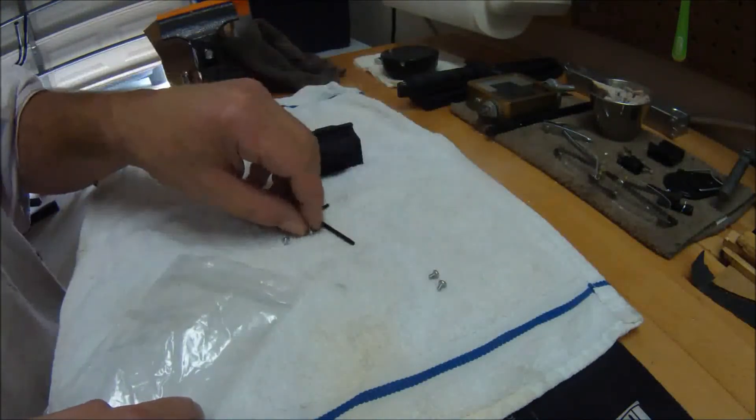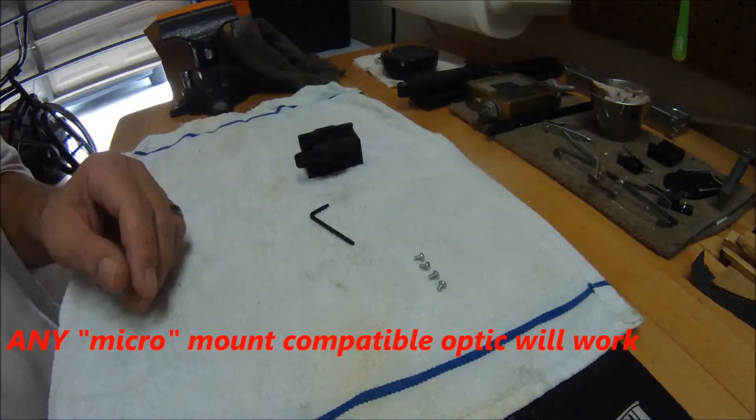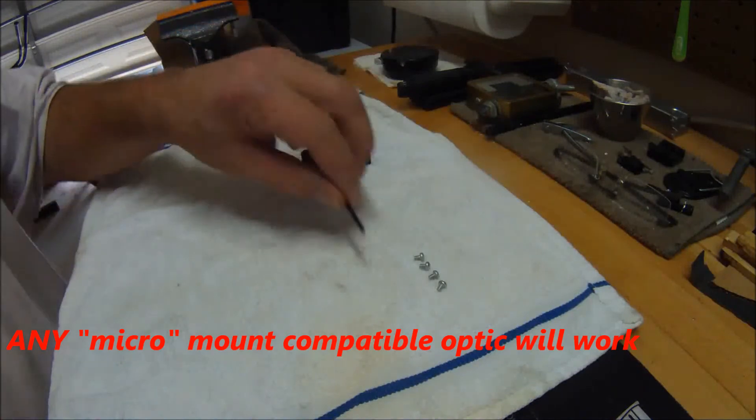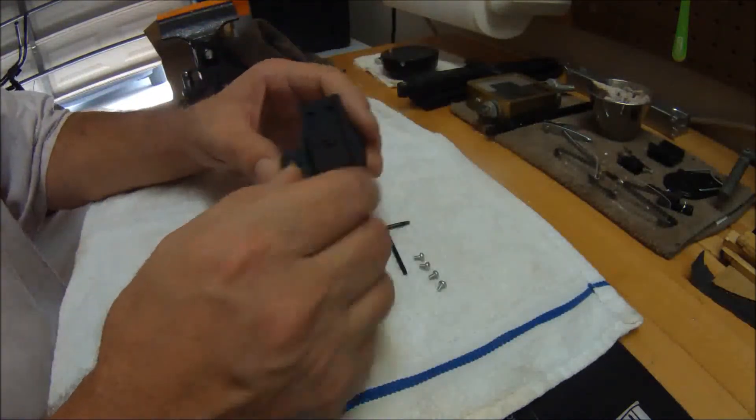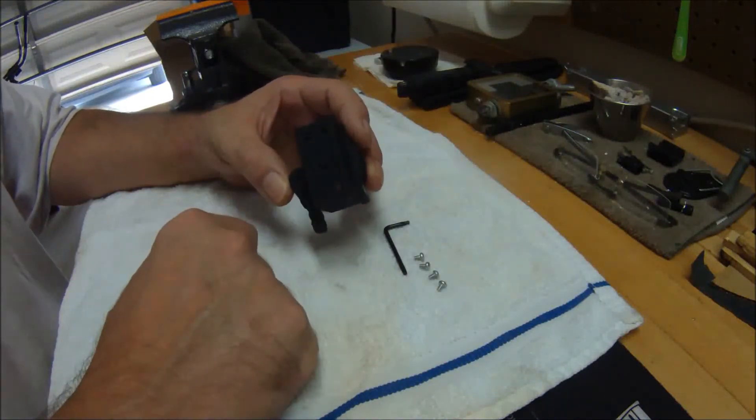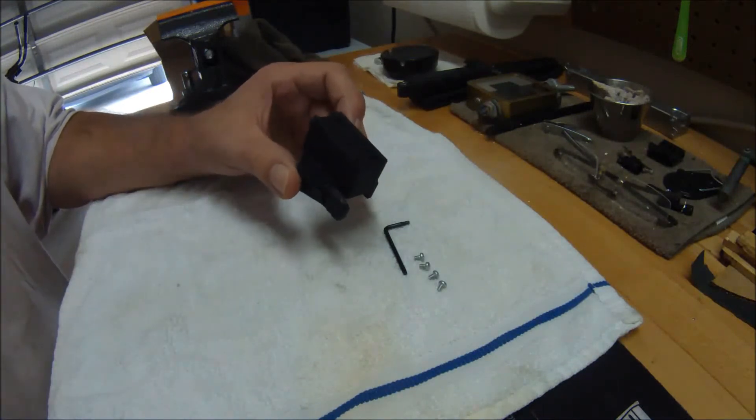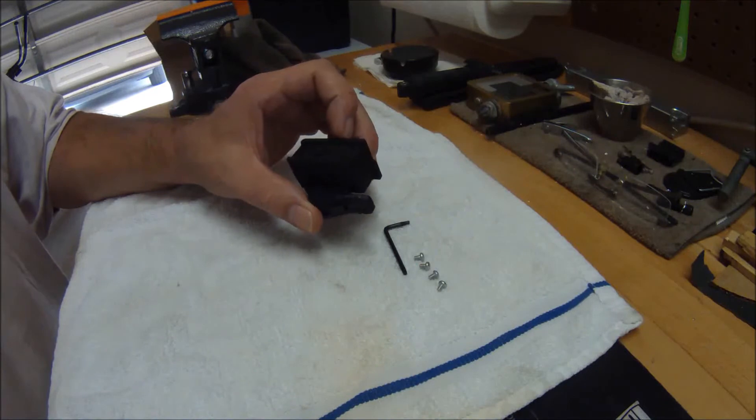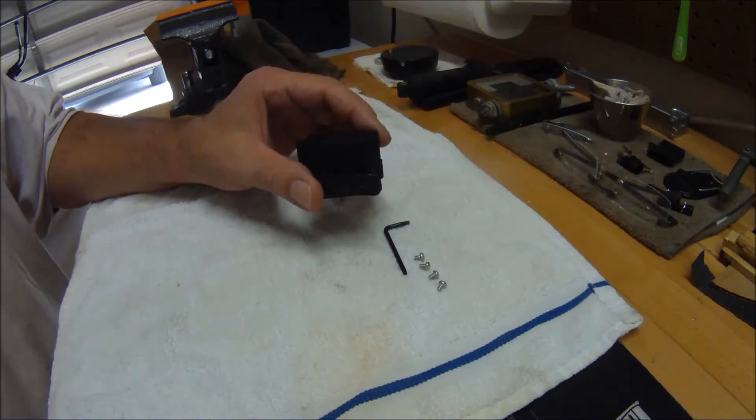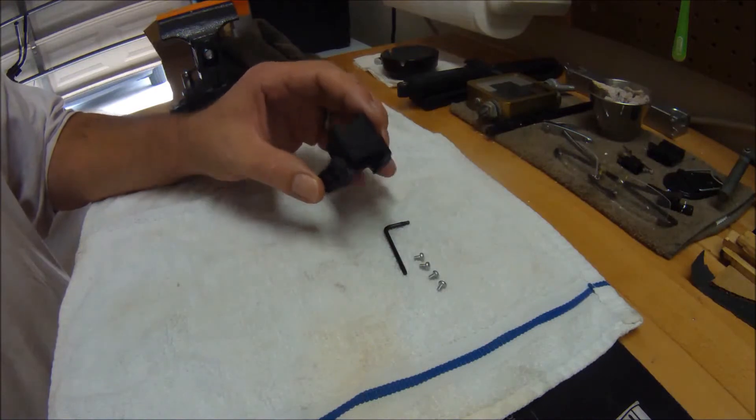Basically this mount will work on your Aimpoint Micros and any optic that has a similar mounting pattern. You can see here you'll have the square centering notch and then the four mounting holes on each corner. Typically your optic of choice will include screws with some kind of a base mount or something along those lines. And generally nine times out of ten, they'll recommend you use those screws so that you don't overdrive the screws and cause any damage.